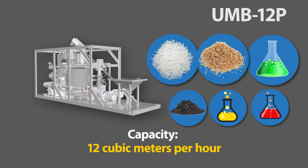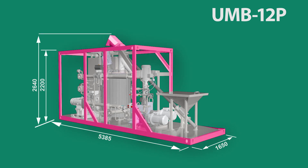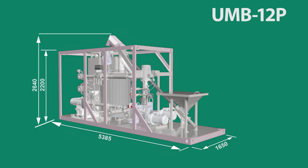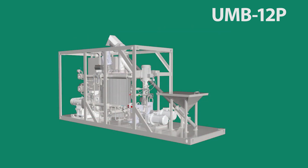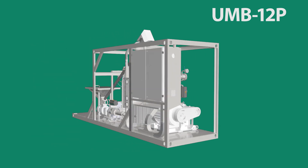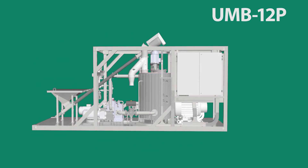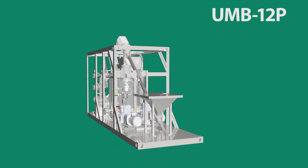The UMB-12P unit is mounted inside a frame structure with dimensions suitable for transportation in a standard 20-foot container. The frame itself has increased rigidity so the unit can be quickly installed or redeployed in the field when the asphalt concrete plant location changes.